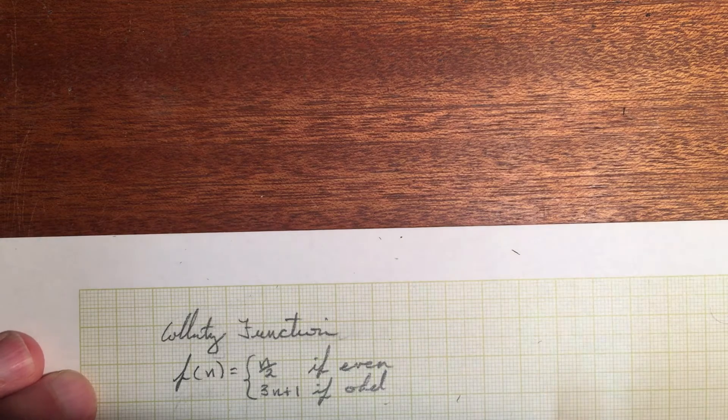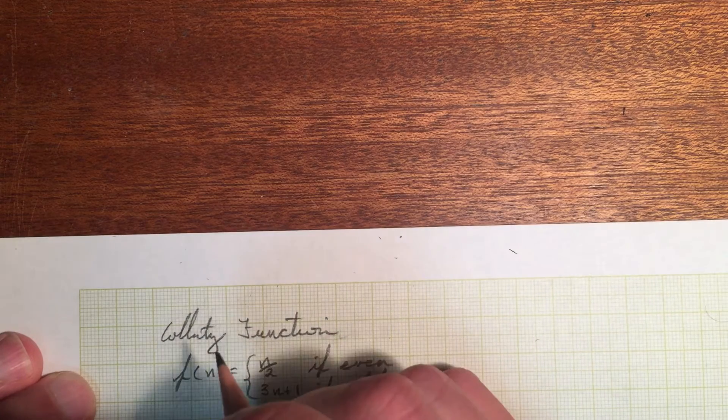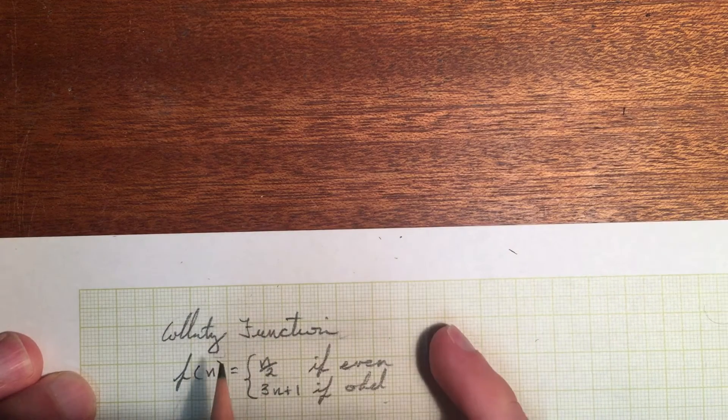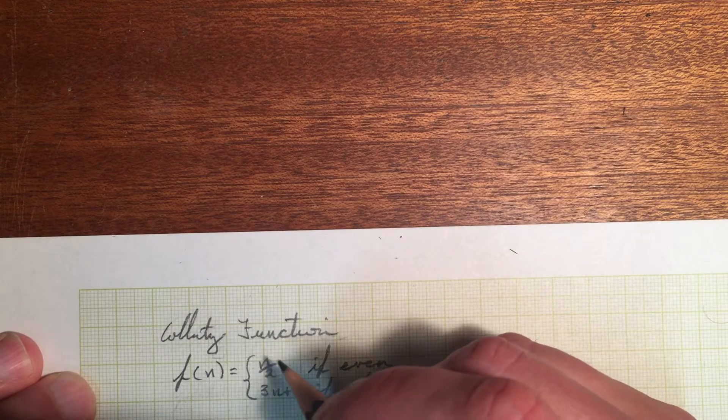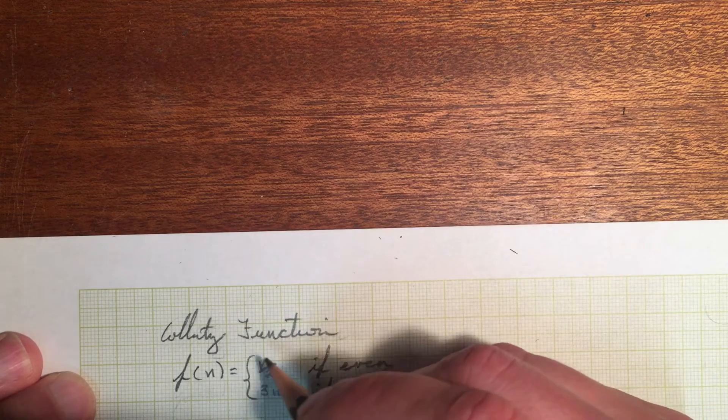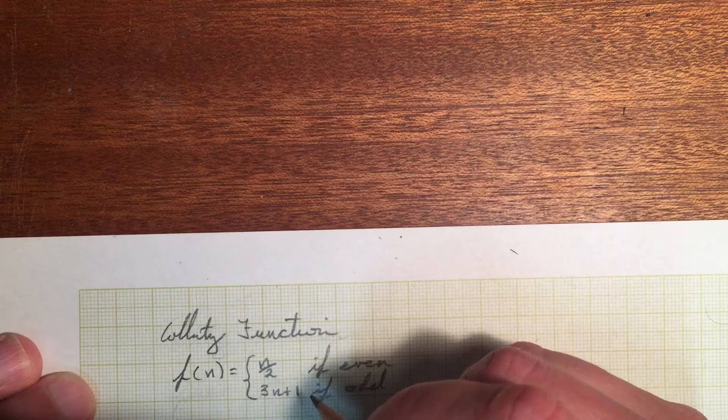So just to start, we'll recall the Collatz function, which is a function which takes an input n, and then there are two rules for this function. If the number n is even, we're going to divide it by two, and if it's odd, we're going to multiply it by three and add one.